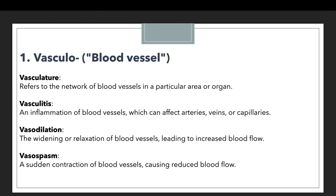Now let's walk through some examples. The first example is vasculature. Vasculature refers to a network of blood vessels in a particular area or organ. Imagine a body part where multiple blood vessels are grouped together and form a network-like structure — that structure is denoted with the terminology vasculature, which is initiated by the prefix vasculo.